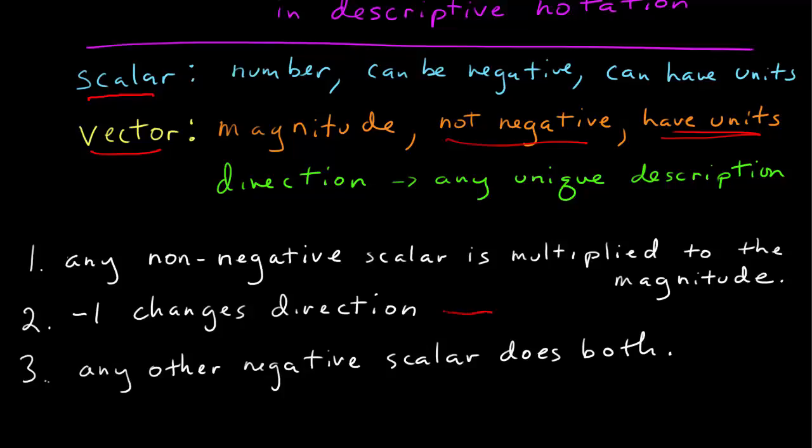If you have negative 1, that changes the direction. Multiplying by the number negative 1 points the vector in the opposite direction. And any other negative scalar does both, because any other negative scalar is just the combination of a non-negative scalar and the negative one.